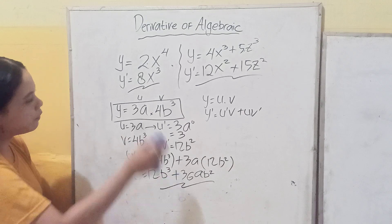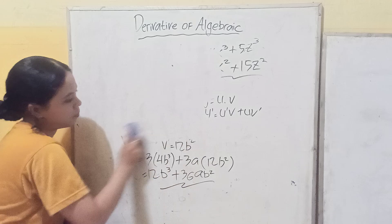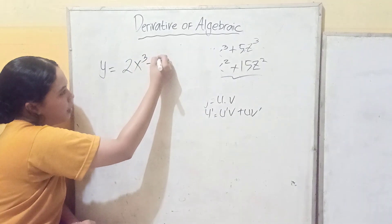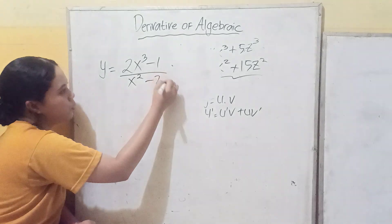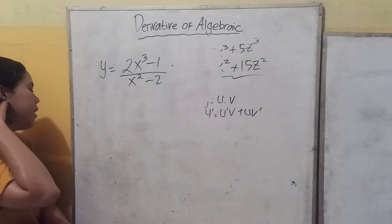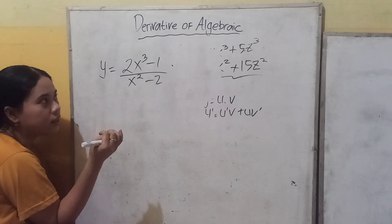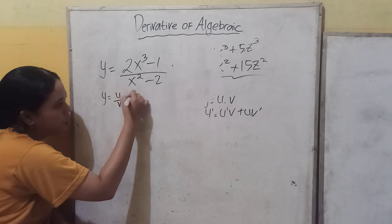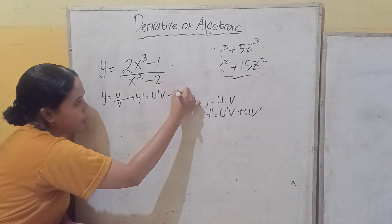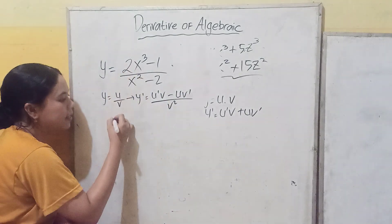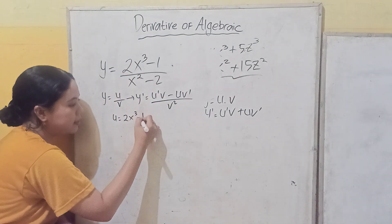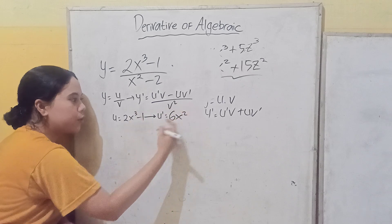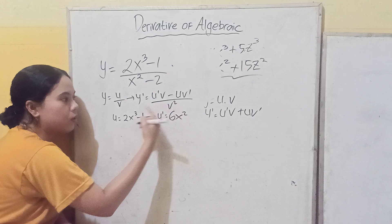Now how about divisions? For the quotient rule, if y equals u over v, then y' equals (u'v minus uv') over v squared. Here, remember: if it's a constant number — a number without a variable — its derivative will be 0. So let u equal 2x cube minus 1. Then u' equals 6x squared, since the constant minus 1 becomes 0.